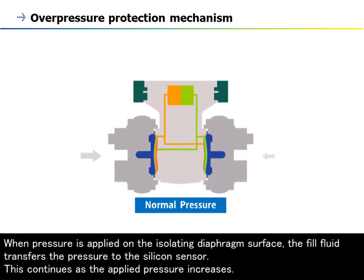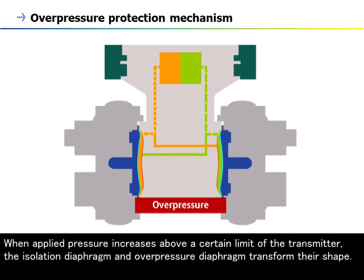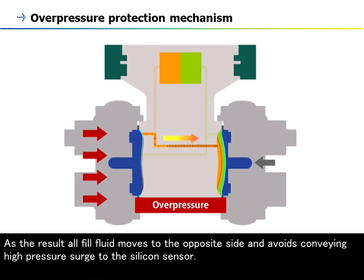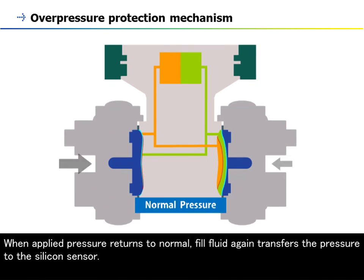When pressure is applied on the isolating diaphragm surface, the fill fluid transfers the pressure to the silicon sensor. This continues as the applied pressure increases. When applied pressure increases above a certain limit of the transmitter, the isolation diaphragm and overpressure diaphragm transform their shape. As a result, all fill fluid moves to the opposite side and avoids conveying high-pressure surge to the silicon sensor. When applied pressure returns to normal, fill fluid again transfers the pressure to the silicon sensor.